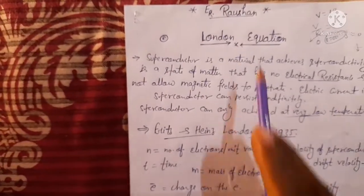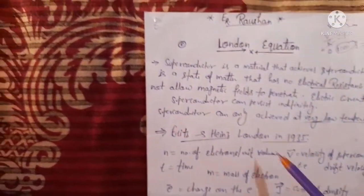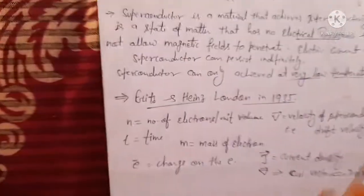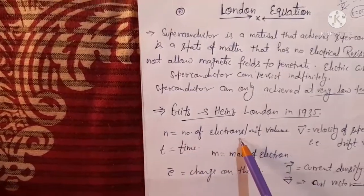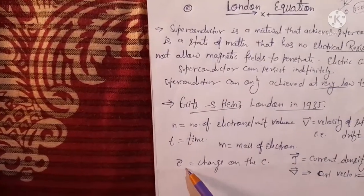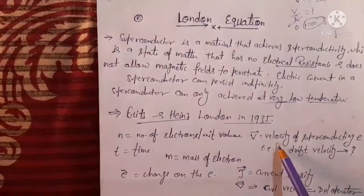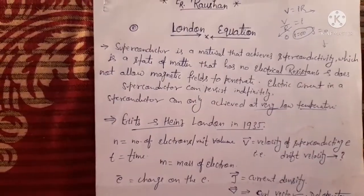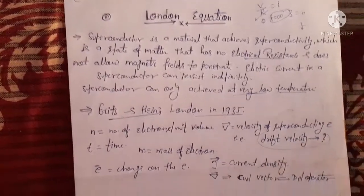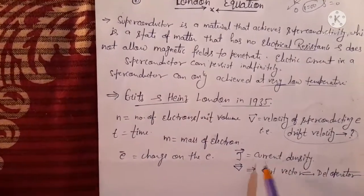The London equation was discovered in 1935 by Fritz and Heinz London, so this is named the London equation. The terms are: n equals number of electrons per unit volume, t equals time, m equals mass of electron, e equals charge on the electron (negative charge), vector v is the velocity of superconducting electrons — that is, drift velocity — and vector j denotes current density.